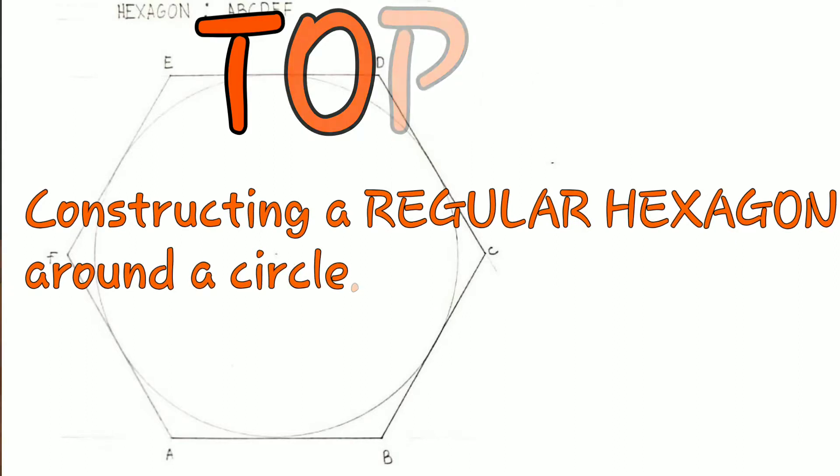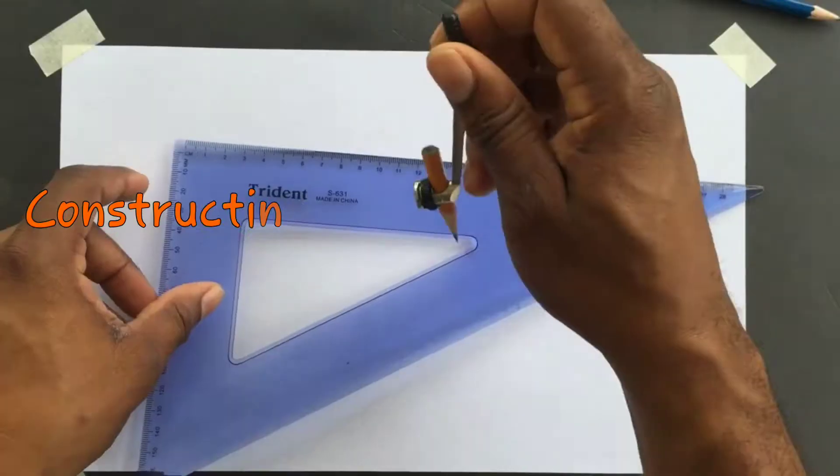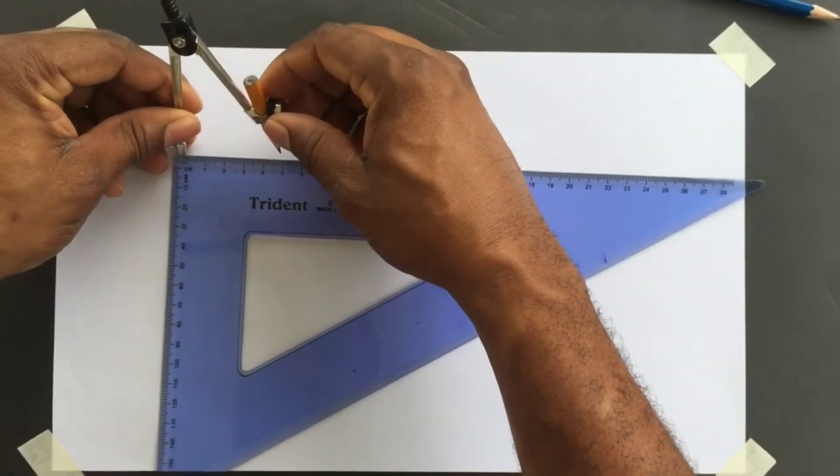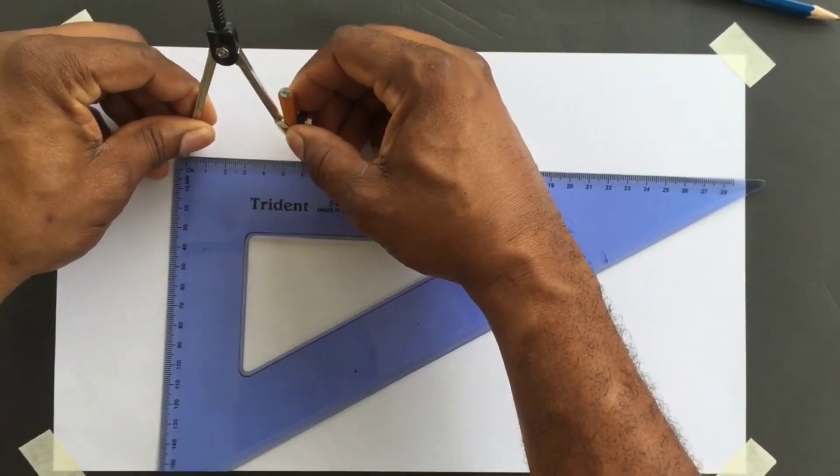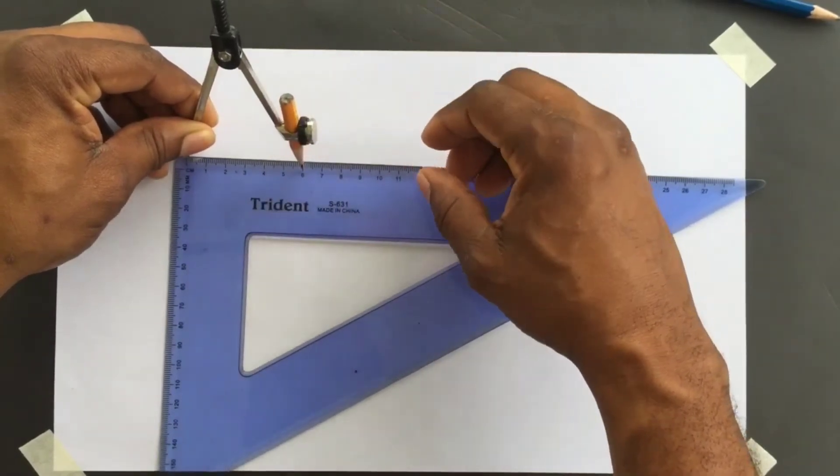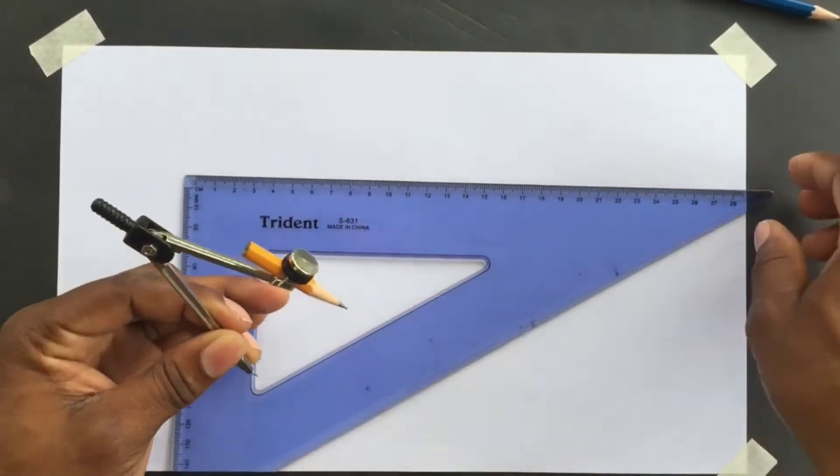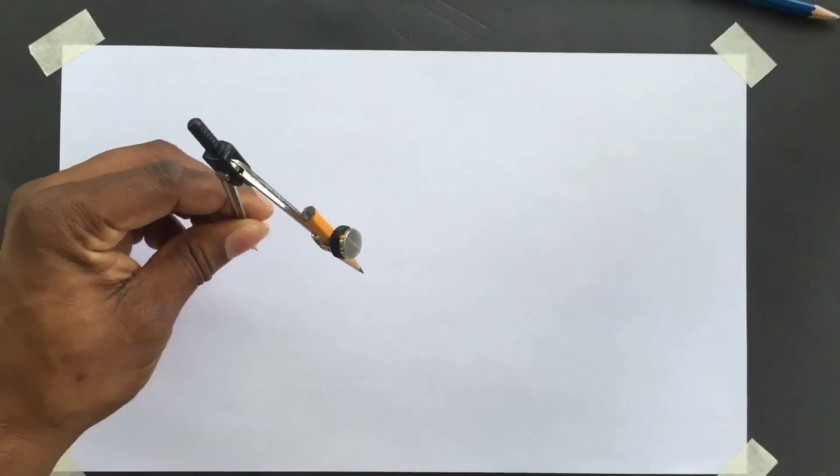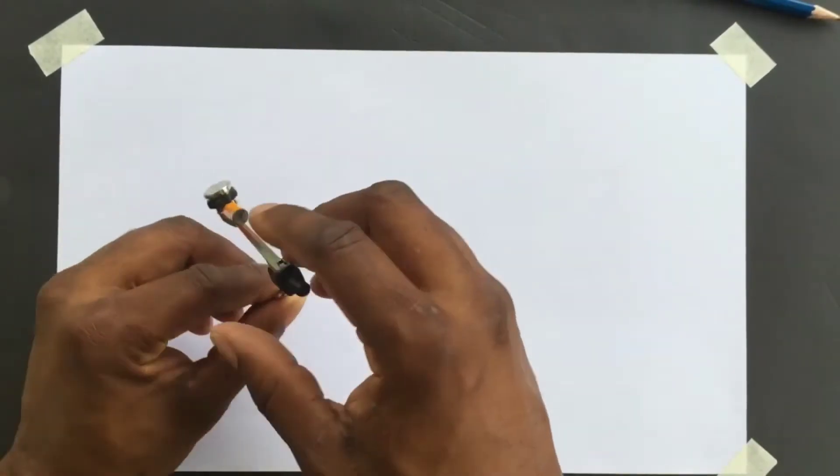We'll first open our compass to a radius of 60 millimeters. We will now draw our circle.